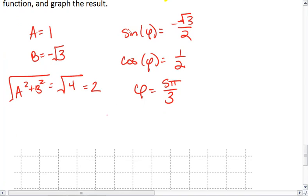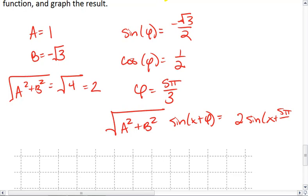So our final equation, which is the square root of a squared plus b squared sine x plus phi, ends up equaling 2 sine x plus 5 pi thirds.